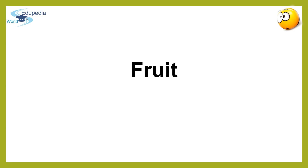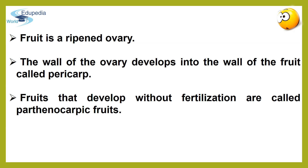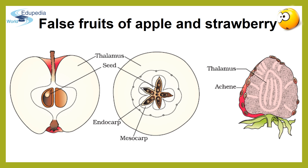After the seed, let's start with the structure of a fruit. Fruit is a ripened ovary. The wall of the ovary develops into the wall of the fruit called the pericarp. When fruits are developed without fertilization, such fruits are called parthenocarpic fruits, and such fruits are usually seedless. Interestingly, in most plants, by the time the fruit develops from the ovary, other floral parts degenerate and fall off. However, in a few species such as apple, strawberry, and cashew, the thalamus also contributes to fruit formation — such fruits are called false fruits. Most fruits develop only from the ovary and are called true fruits.